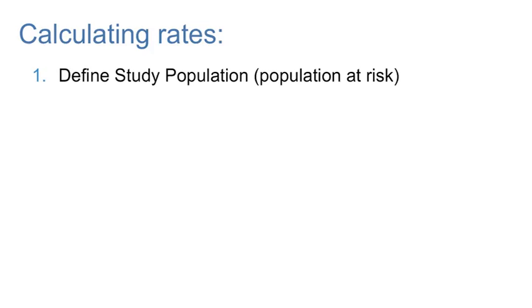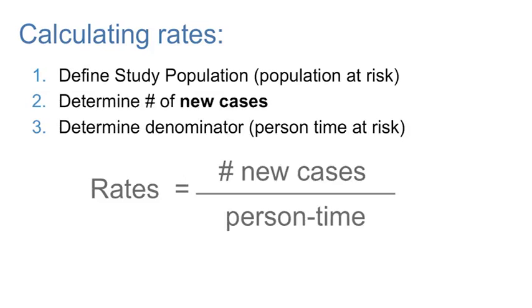Now that you understand how to calculate person time, let's use this information to calculate a rate. Remember, in order to calculate a rate, we must define our study population, determine the number of new cases of the health outcome, and specify our denominator, which is person time at risk.